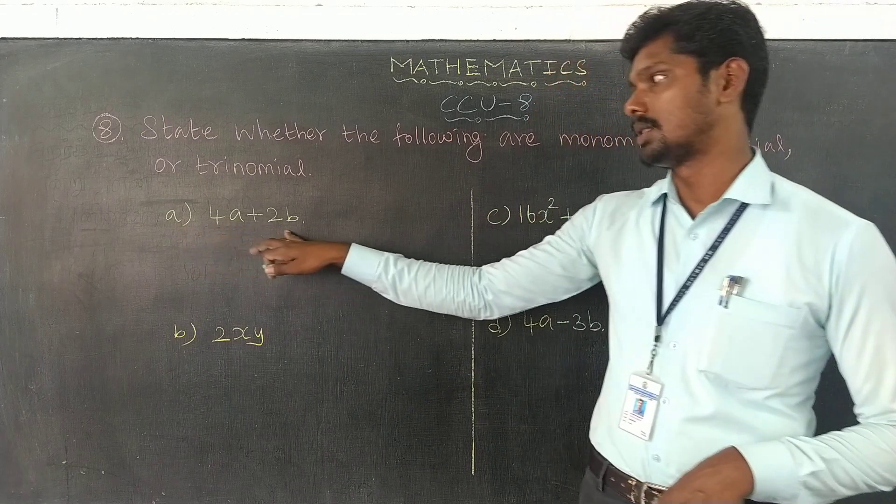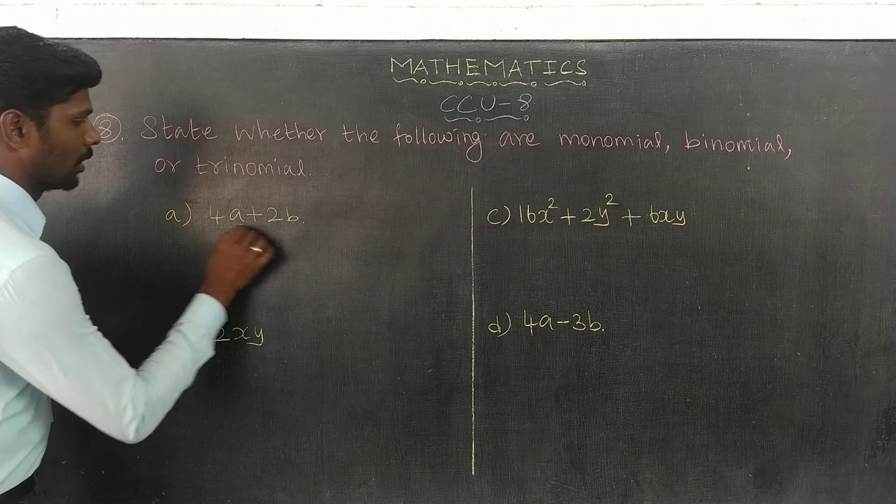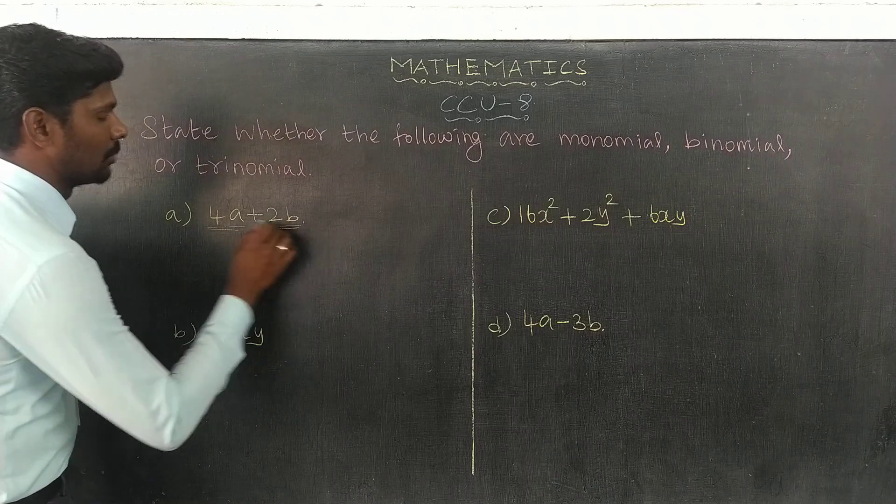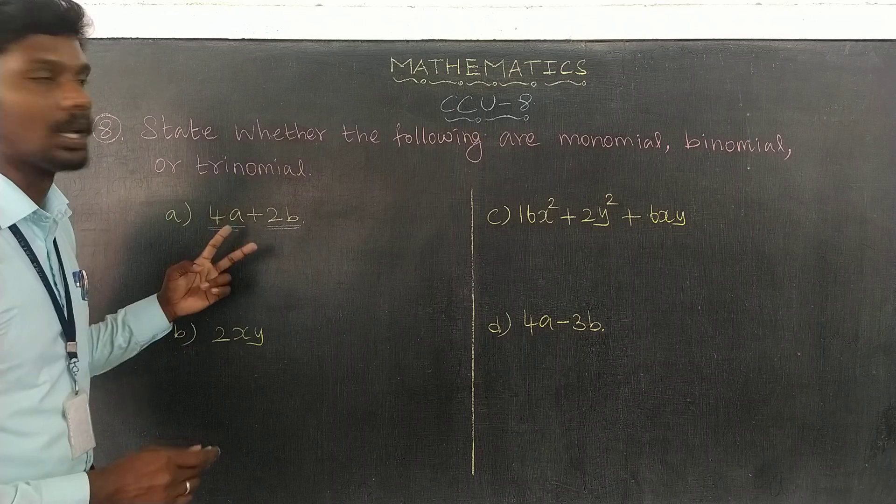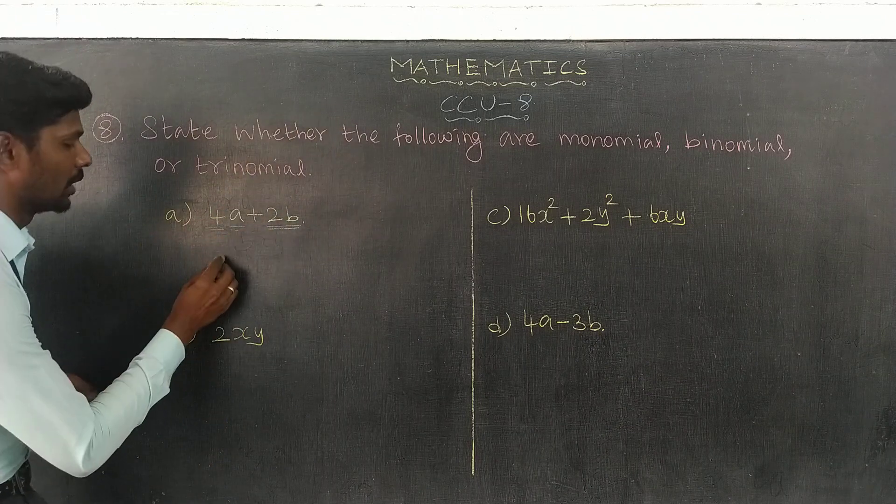So, option a) 4a plus 2b. 4a plus 2b, two terms are written, so it is binomial. 4a plus 2b is binomial.